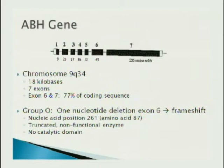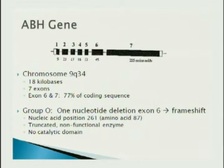The ABH gene is located on chromosome 9 and is about 18 kilobases. Exons 6 and 7 code for most of what is expressed. For group O, just a one-nucleotide deletion causes a frameshift that truncates the enzyme, making it non-functional.